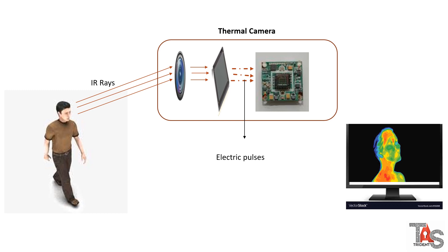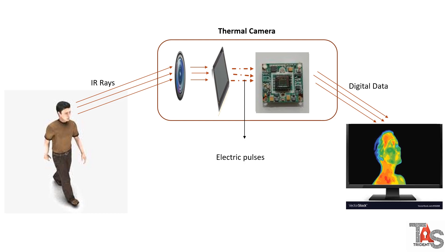Intensity of electric pulses differ based on the sensitivity of the IR rays. Signal processing unit sends the processed information as digital data which is recreated in the monitor in various colors.